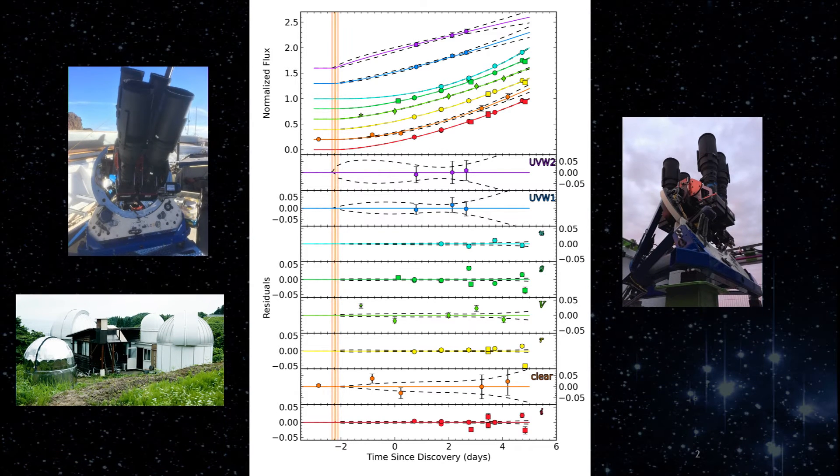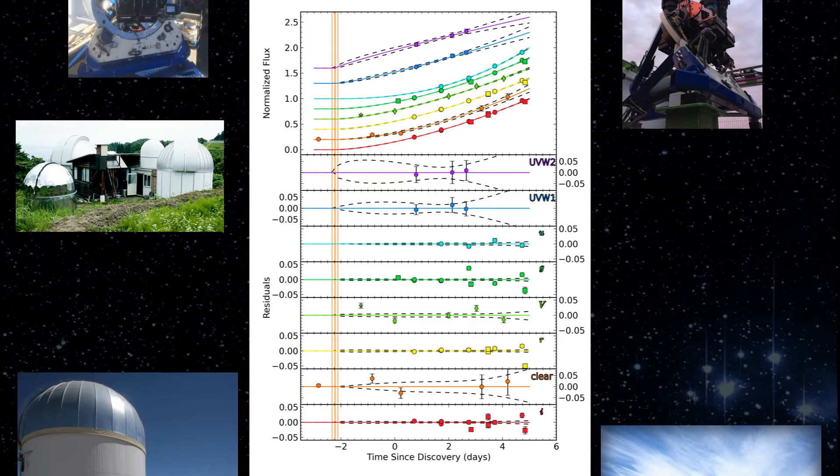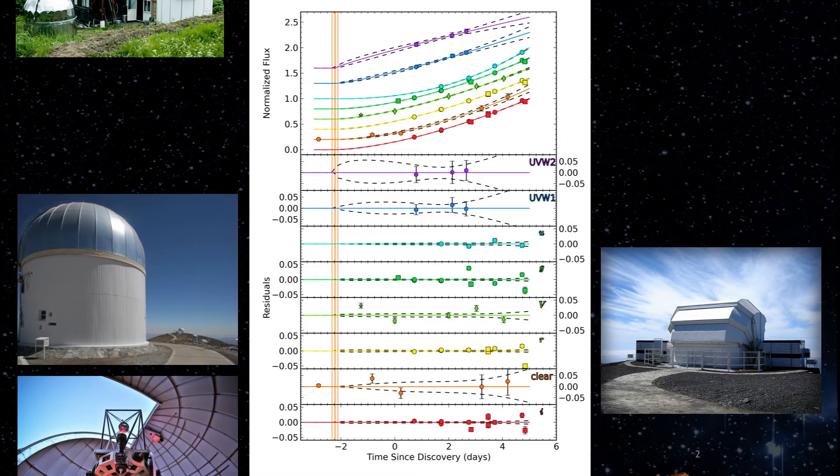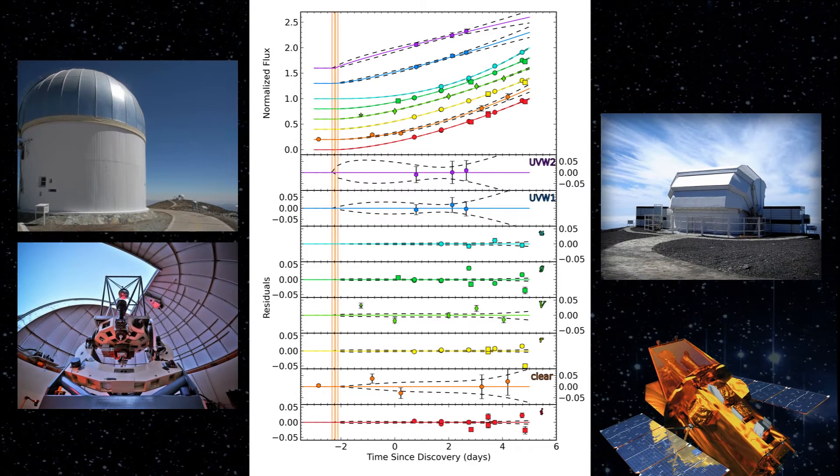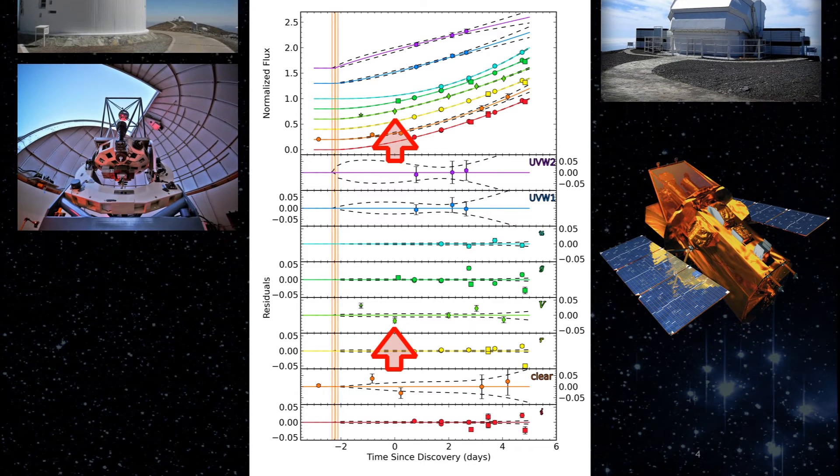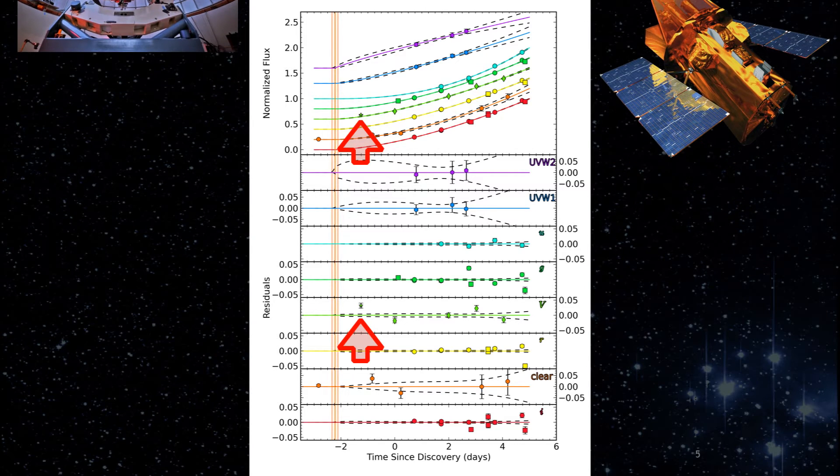The early-time follow-up photometry were acquired by the Carnegie Supernova Project, Liverpool Telescope, LCOGT Global Network of 1 meters, and the Swift Space Telescope. We found that we discovered ASSASSIN 14LP just two days after first light, and we detect the supernova in observations acquired more than a day earlier.